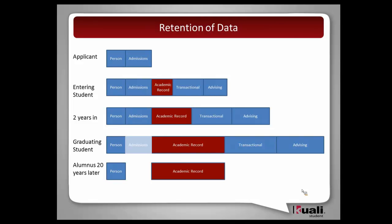I'll walk through a timeline of a student and look at some pieces of information. When a person first applies to an institution, you really don't have an academic record yet. You haven't engaged in anything with the institution except submitting information. At that point you're a person and mostly admissions data. We haven't accepted you yet. Some institutions might start creating a PI record, and some might have a sliver of academic record started depending on how they handle transfer credits — some institutions start entering transfer credits even for applicants.